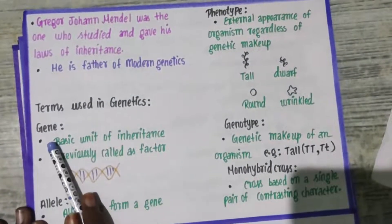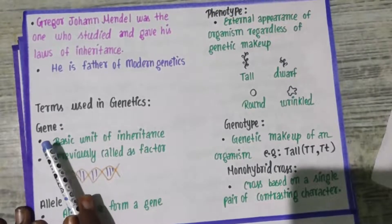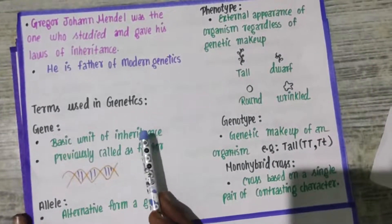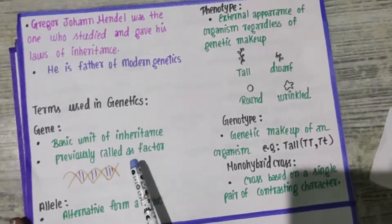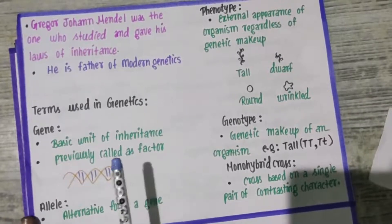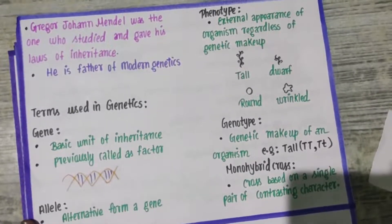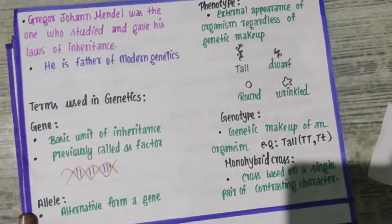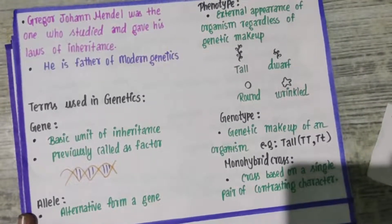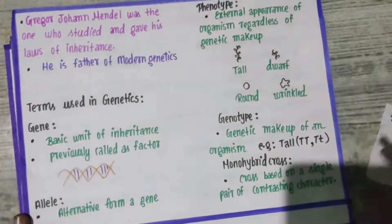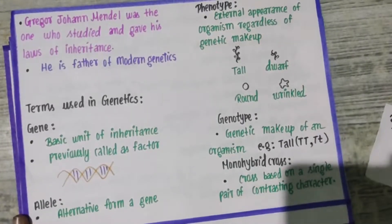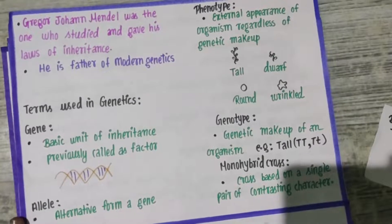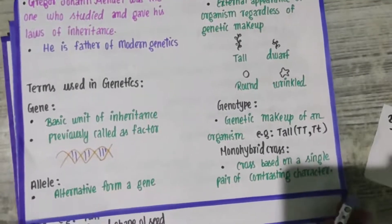The first term is gene. Gene is the basic unit of inheritance, and it is also known as factors — Mendel called them factors. If you want to know the definition of a gene, it is nothing but a part of DNA. A DNA sequence is known as a gene.